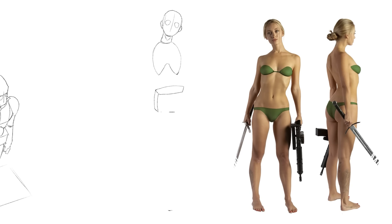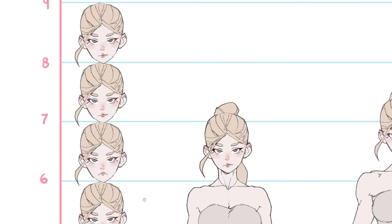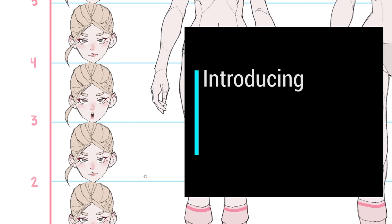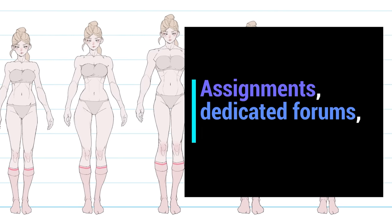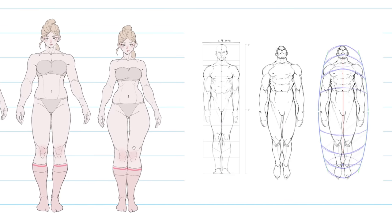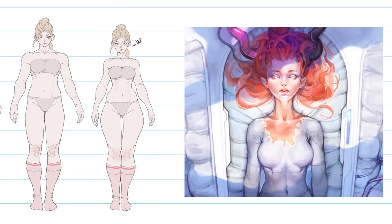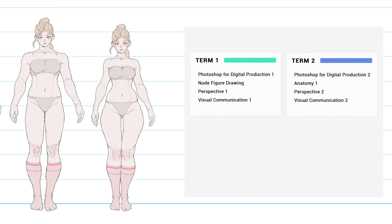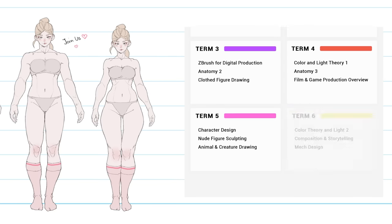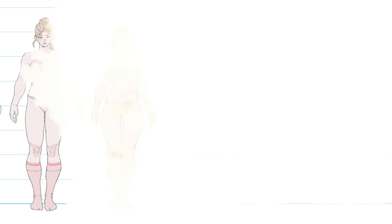For more details on body proportions, I have a class that goes into this a lot more, linked in the video description. And for a super deep dive on the body and many other art topics like colors, shading, perspective, composition, storytelling, character design, props, environments, animals and creatures, mechs, and a whole lot more, make sure you check out the art school program for digital artists. It's a complete art education from the comfort of your home, the most popular art program in the world. There's a huge back-to-school sale going on right now, so check it out with the link in the video description and join our awesome community of artists.